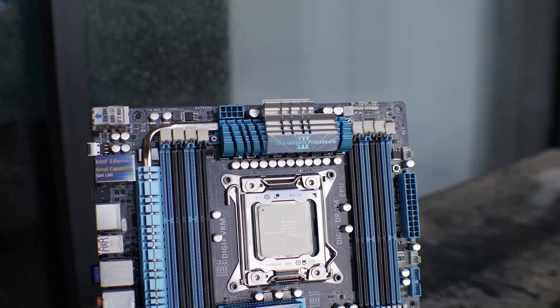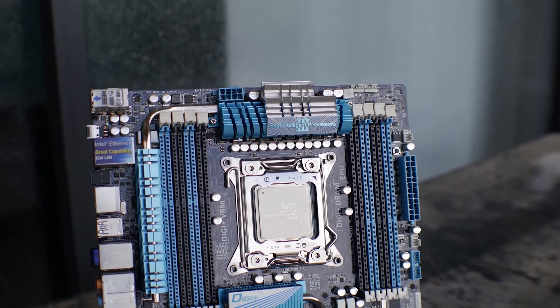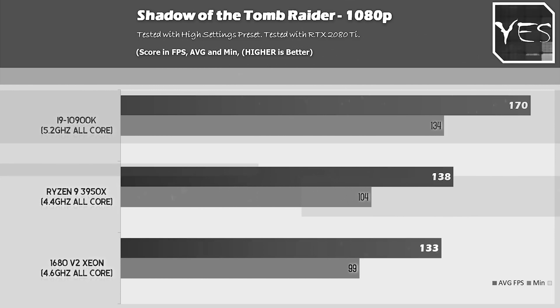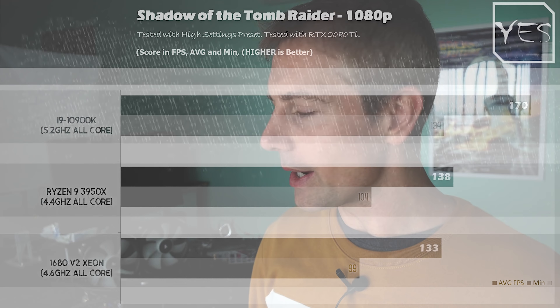We're also gonna throw in a twist, and that is we're gonna include a 1680 V2 Xeon, which is a seven-year-old CPU. This CPU performed phenomenally well when I tested it against the 10900K and also the 3950X. With those introductory details out of the way, let's quickly take a look at what these test system configs have in them, and then roll those numbers for you guys.